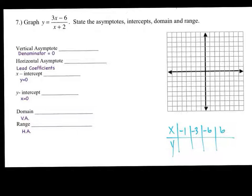For the vertical asymptote, if we set the denominator equal to 0, that would be x plus 2 equal to 0. So the vertical asymptote is going to be at negative 2. The horizontal asymptote will be the same as our example. We have a lead coefficient of 3 over a lead coefficient of 1. So that's going to be at y equals 3.